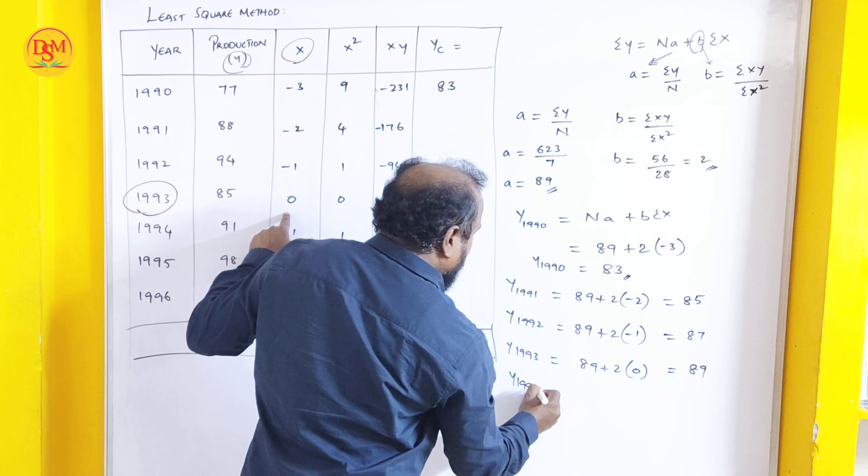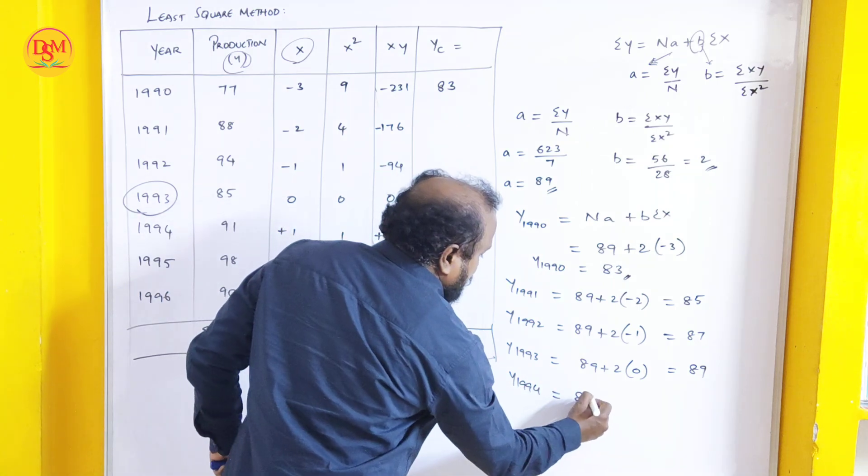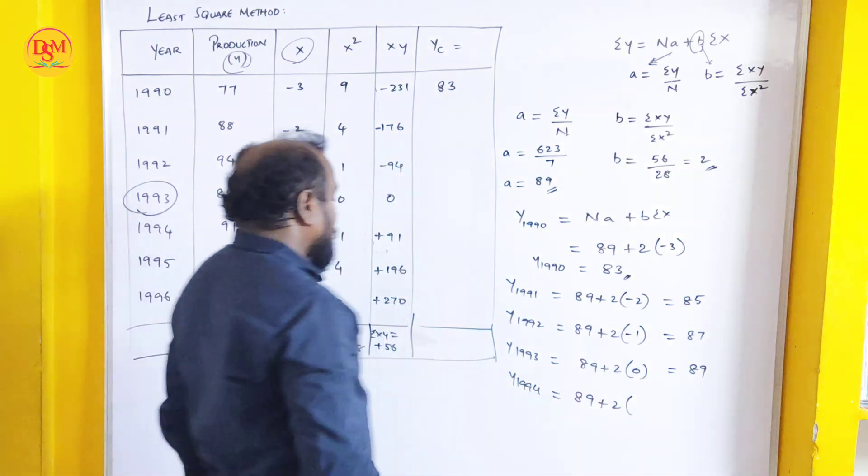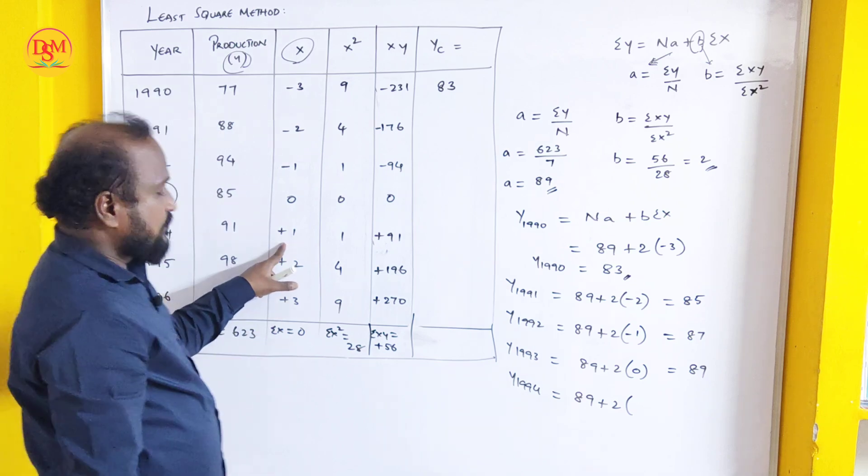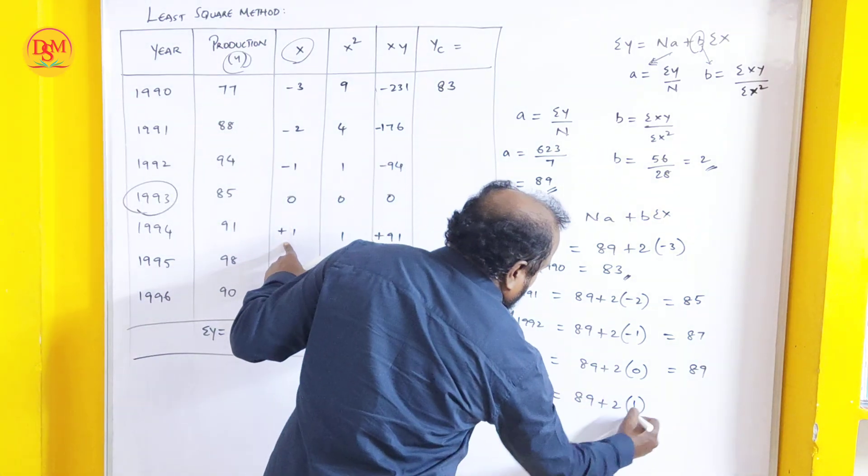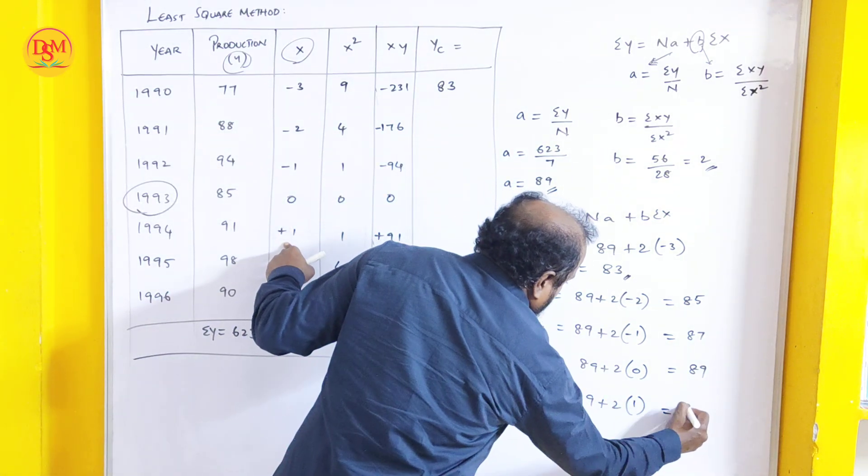For the year 1994, a value is 89 plus b value is 2. Sigma x is plus 1. 2 into 1 is 2. 89 plus 2 is 91.